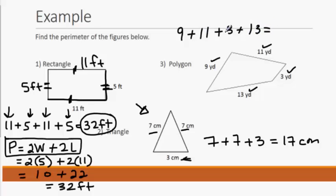9 plus 11 is going to give us 20, plus 3 is 23, plus 13 is going to give us 36. This is going to be 36 yards, linear units.